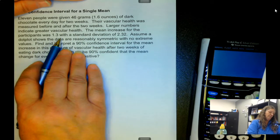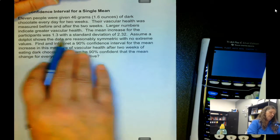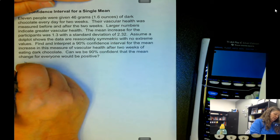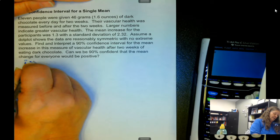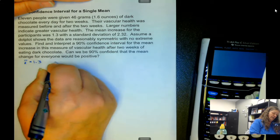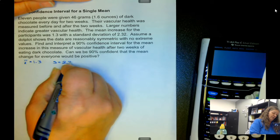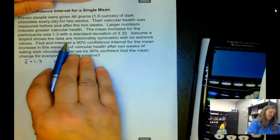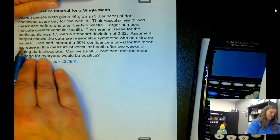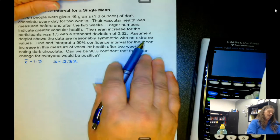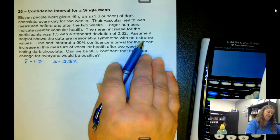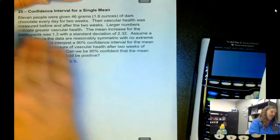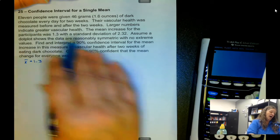The mean increase for the participants was 1.3 with the standard deviation of 2.32. So the mean increase is 1.3 and the standard deviation is 2.32. Assume a dot plot shows the data reasonably symmetric with no extreme values. This goes into the conditions that the sample size has to be greater than or equal to 30. This one is not, but